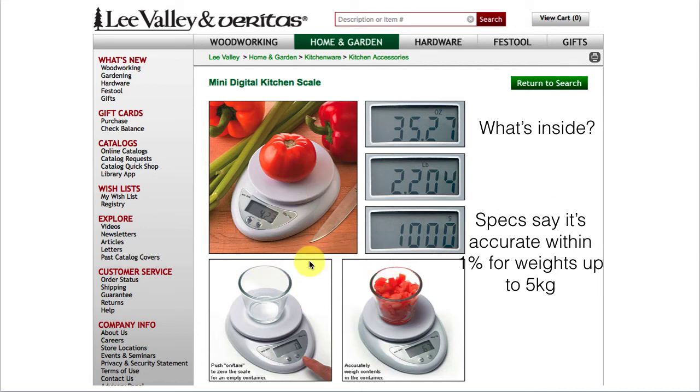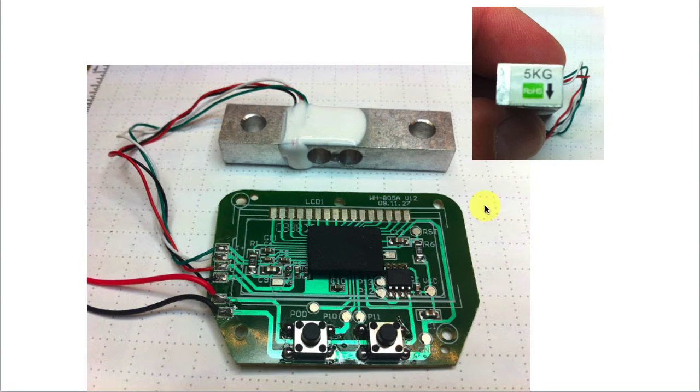So let's look now at some practical applications. This is a weigh scale that you can get from Lee Valley. It's got a digital indicator on the outside. And the specifications say it's accurate within 1% for weights up to 5 kilograms. So that's pretty good. What's inside this thing? What do you think? I wasn't sure, so I took one apart.